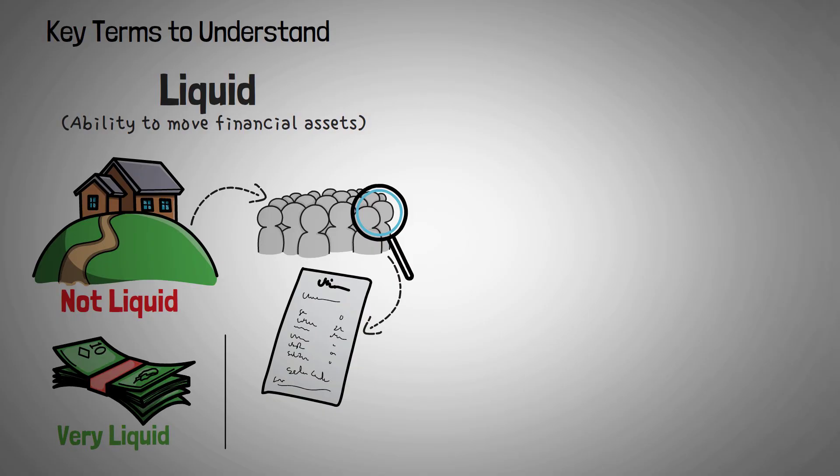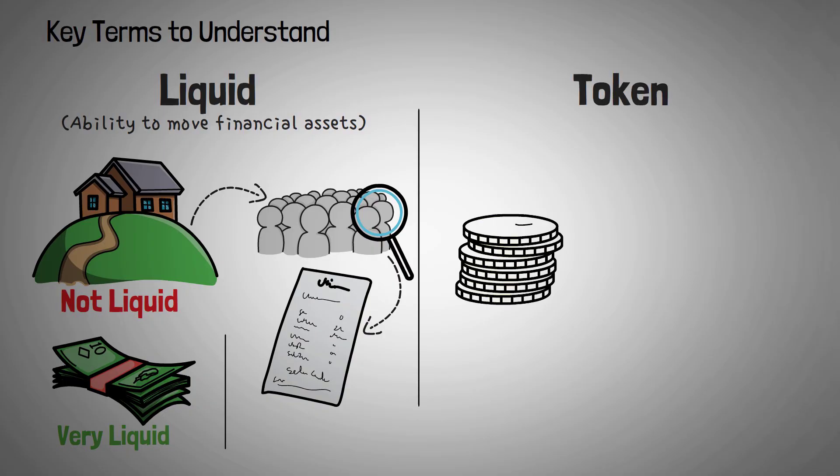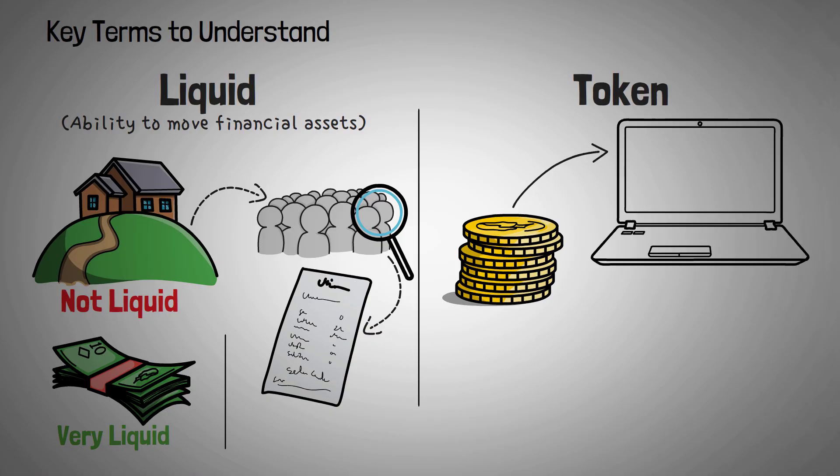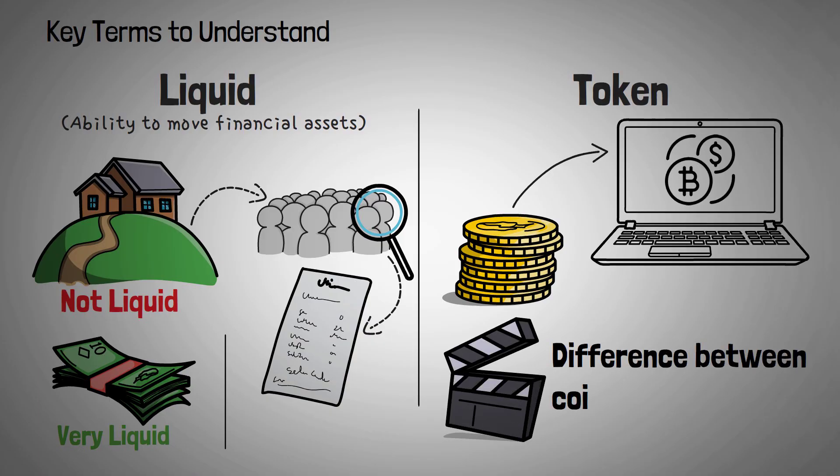And the last term you'll need to understand is token, which refers to a cryptocurrency asset that you can trade or use on DeFi platforms. We have a video explaining the difference between coins and tokens that is linked in the description below.